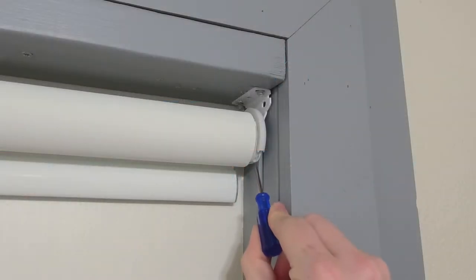First, locate the P1 programming button on your shade. On a tubular motor, the P1 button will be on the motor head.